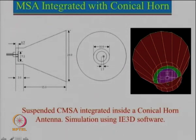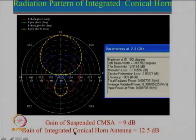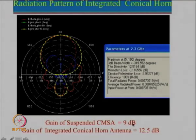A microstrip antenna is relatively easy to design and whatever is the radiation pattern of the microstrip antenna, that will get enhanced. Basically the horn antenna enhances the gain of the microstrip antenna. Even though I am showing this for a single feed right now, different types of polarization can also be obtained by modifying the circular microstrip antenna. The gain of the suspended circular microstrip antenna was approximately 9 dB because it was suspended in air, giving relatively large gain and very good efficiency. Integrating this circular microstrip antenna with the conical horn we got a gain of about 12.5 dB.